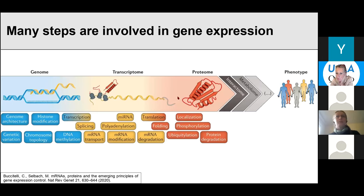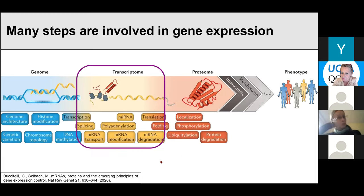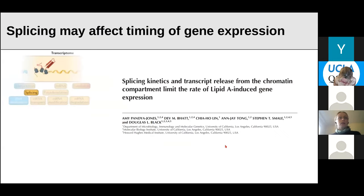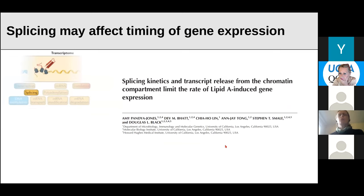There are many steps involved in gene expression, but often when people think about gene expression they only think about transcription and mRNA decay, at least for the mRNA parts which I'm mostly interested in. There are many other steps that might play a role in the output we get in gene expression. One of these steps is splicing, which has been shown to affect timing of gene expression and release from the chromatin compartment.